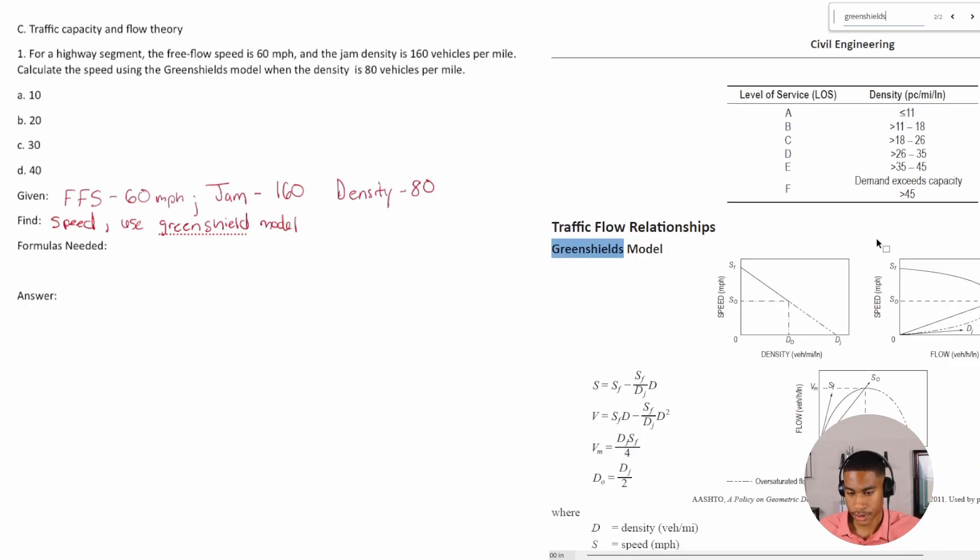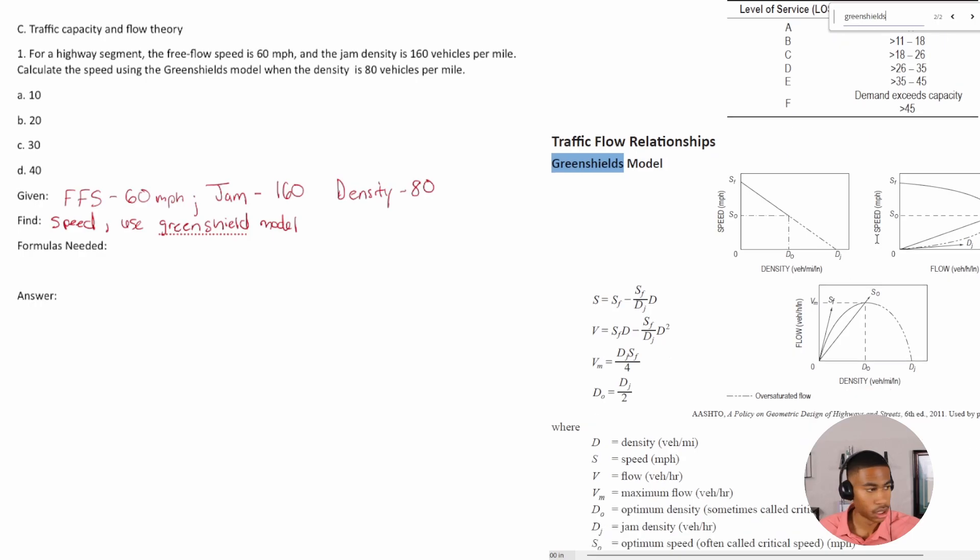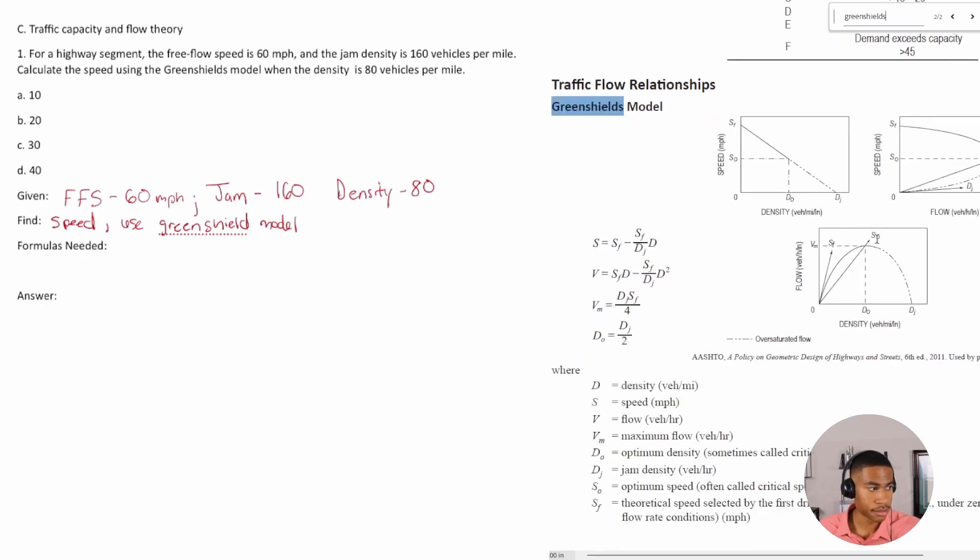And look here, traffic flow relationships. And so based off the given information, we're looking for speed. Speed is according to this, S.